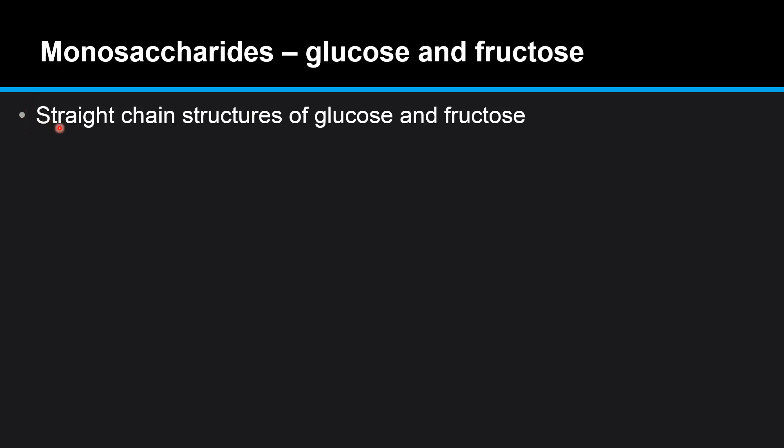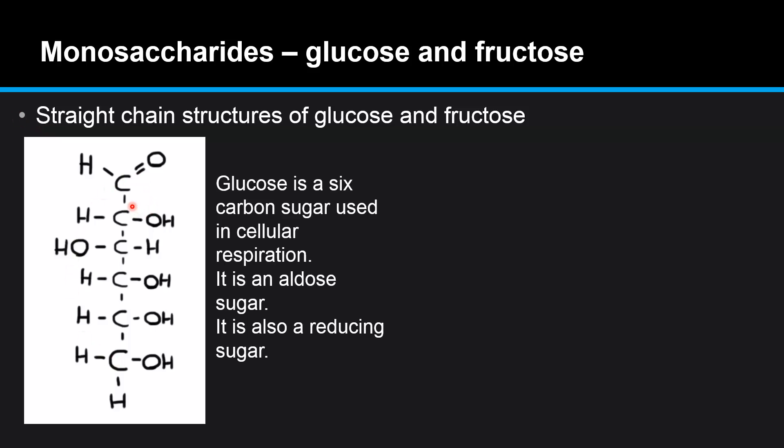We'll start by looking at the straight chain structures of the two monosaccharides. Starting with glucose, it's a six-carbon sugar used in cellular respiration. It's an aldose sugar, which means it has an aldehyde group at the top. It is also a reducing sugar.